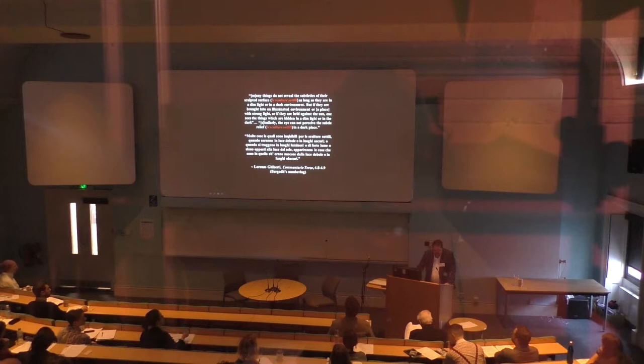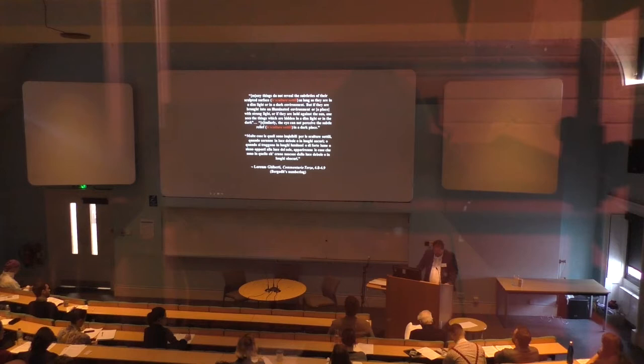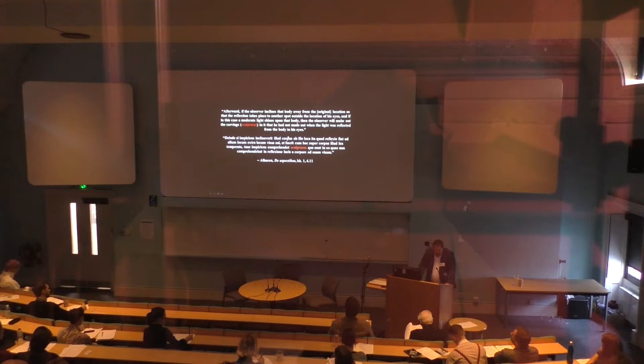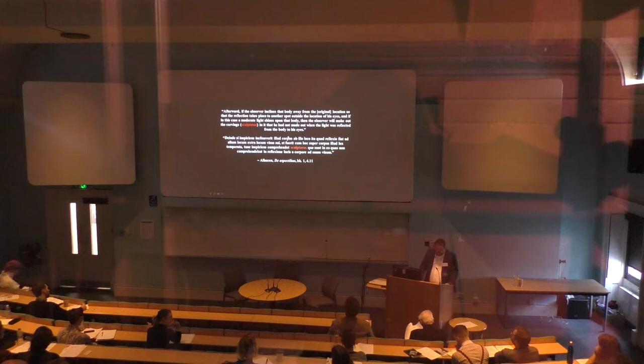Just as interestingly, Al-Haytham also claimed one could only observe the subtle relief if the object was tilted or inclined in some way, which implies the visible aspect of the object changed. Al-Haytham described the process in the following manner: 'Afterward, if the observer inclines the body away from the original location, so that the reflection takes place to another spot outside the location of his eyes, and if, in this case, a moderate light shines upon that body, then the observer will make out the engravings in it that he had not made out when the light was reflected from the body into his eyes.'